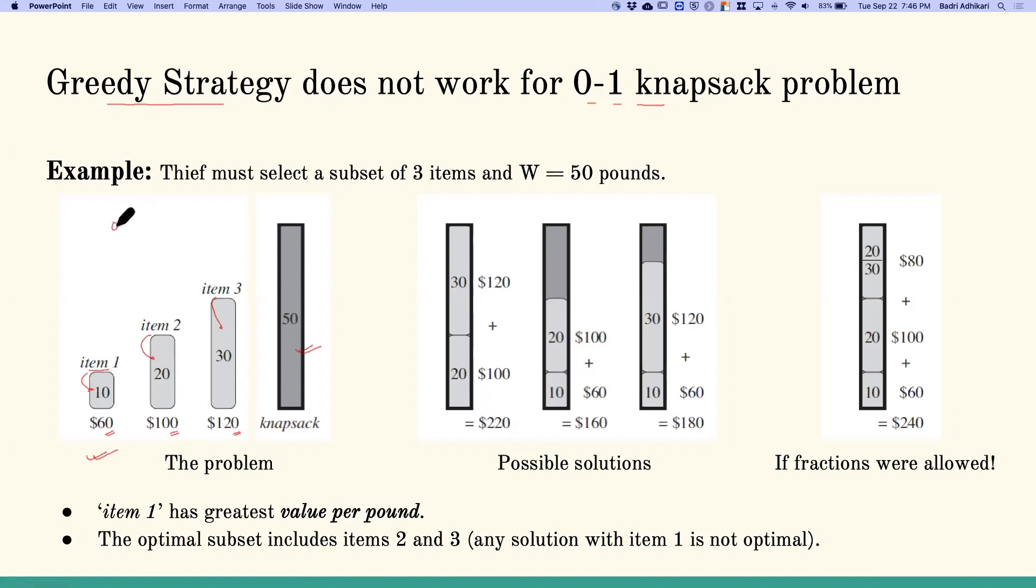If this was a 0-1 knapsack problem, the possible solutions we can imagine are: we can take these two items, 10 plus 20, and then item 3 would not fit - one possible solution. The next possible solution is to take item 2 and item 3, which fills up the knapsack. The next possible solution would be to take item 1 and item 3, which is 40 pounds, and we cannot put 20 pounds after that.